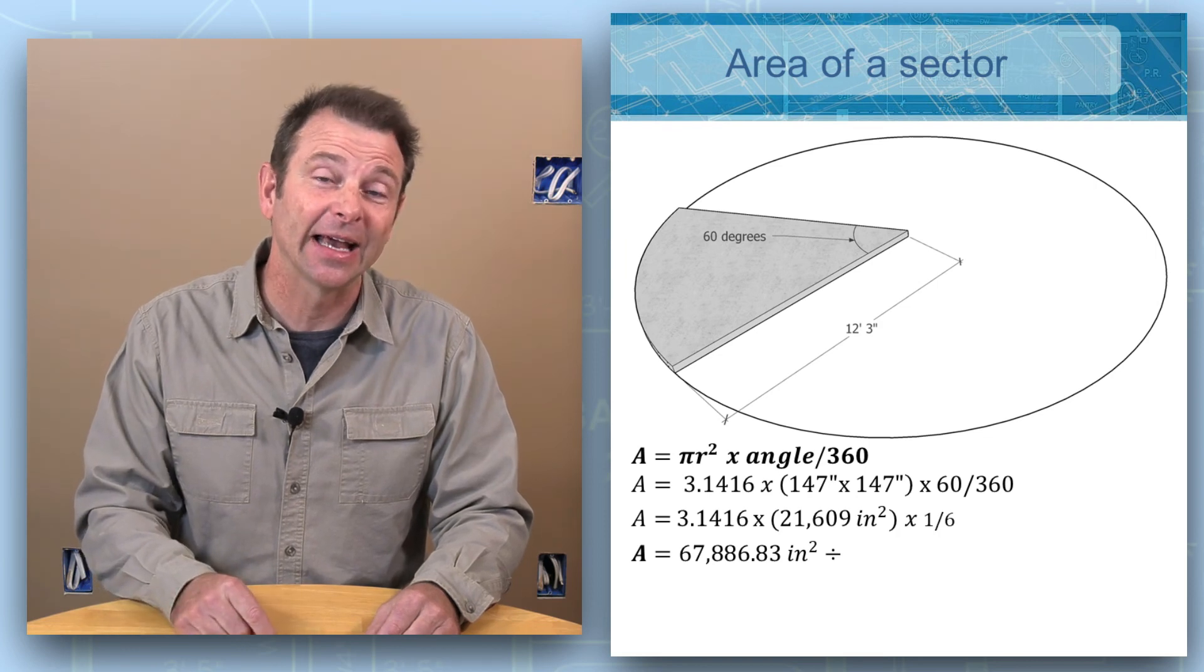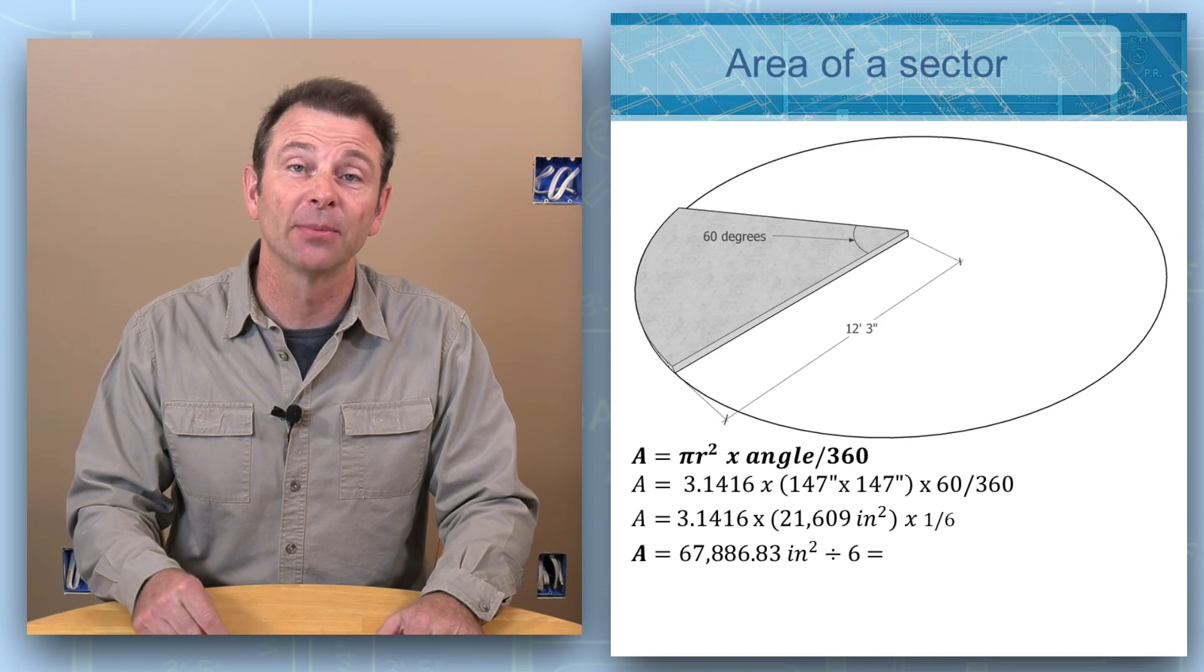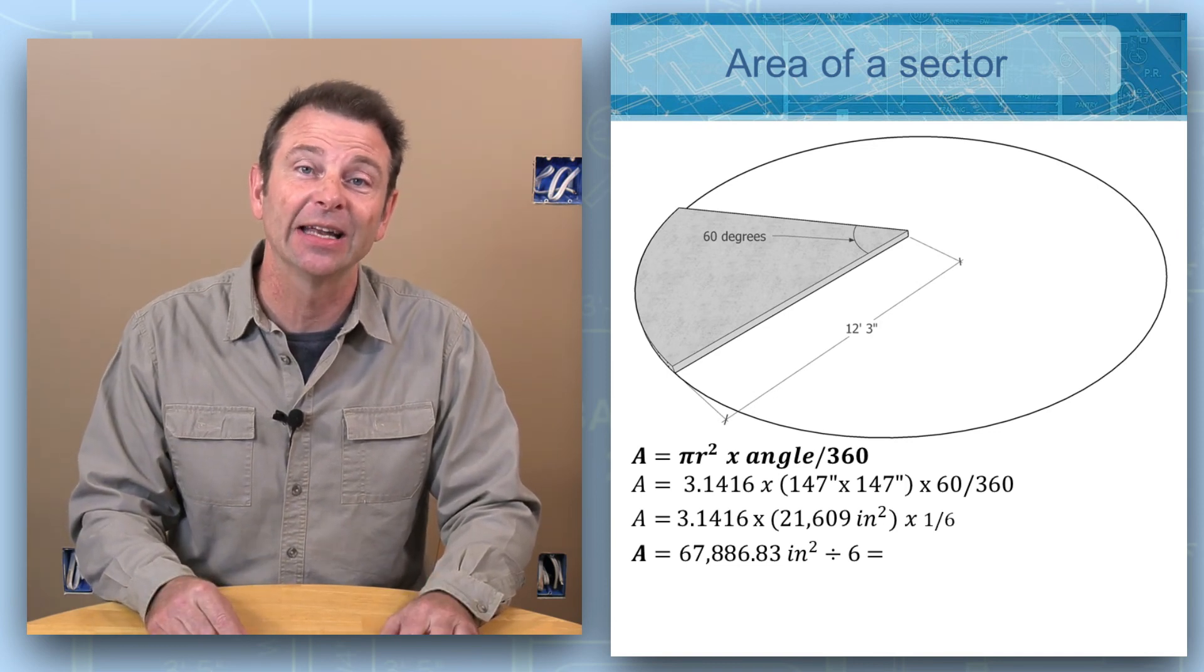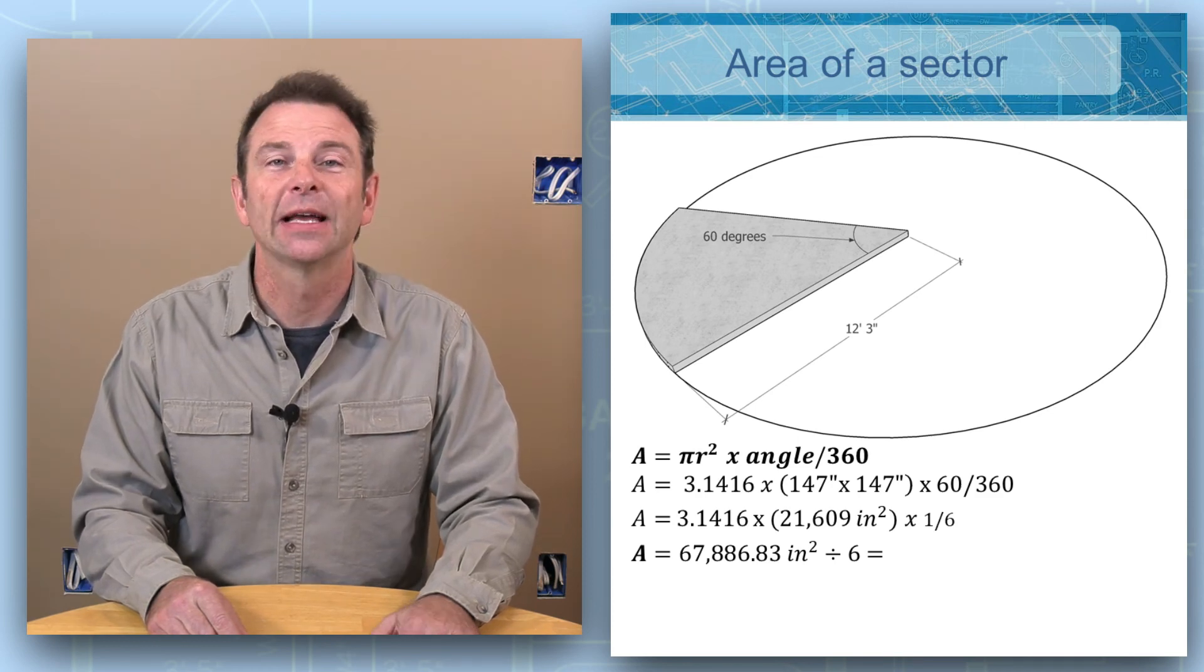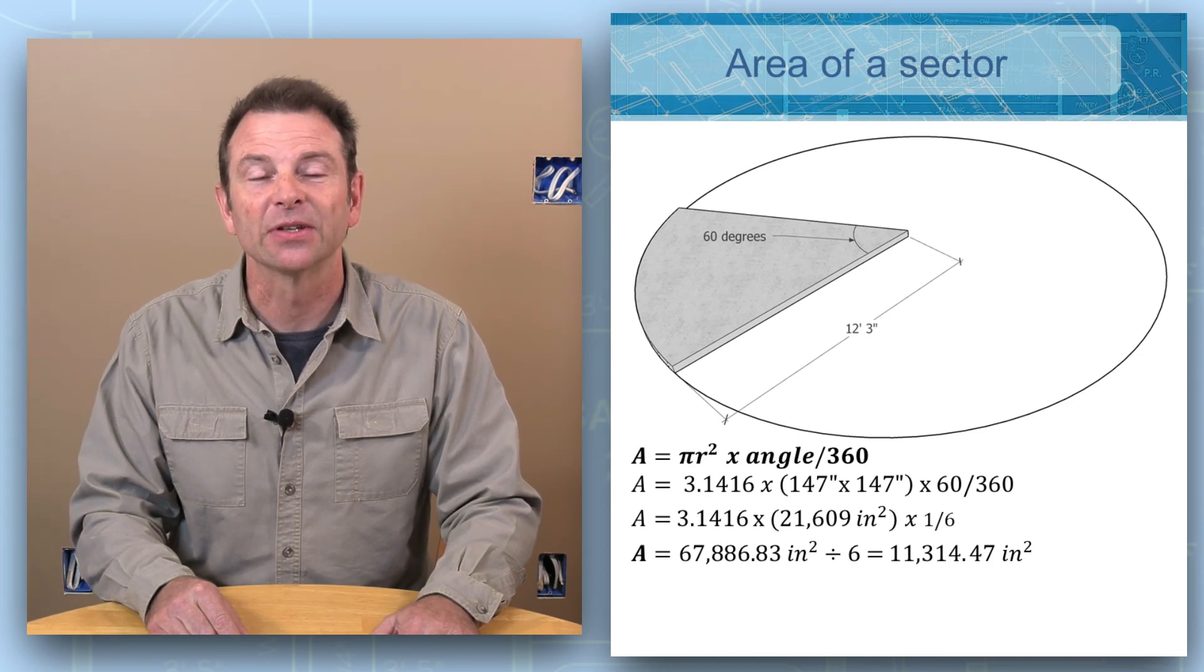If you divide 67,886.83 square inches by 6, you'll end up with 11,314.47 square inches.